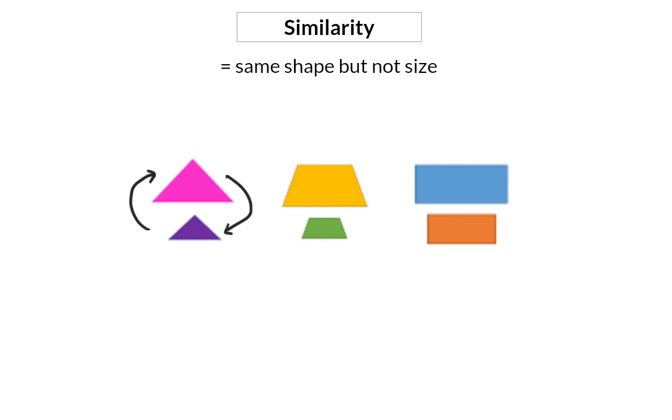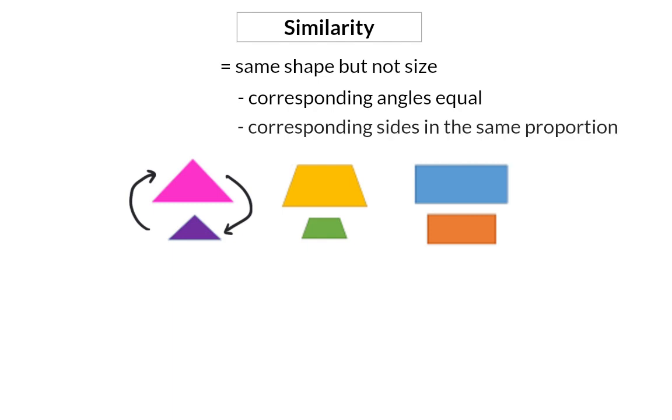To have the same shape, the corresponding angles need to be equal and the corresponding sides need to be in the same proportion. This means they have to be enlarged or reduced by the same factor.